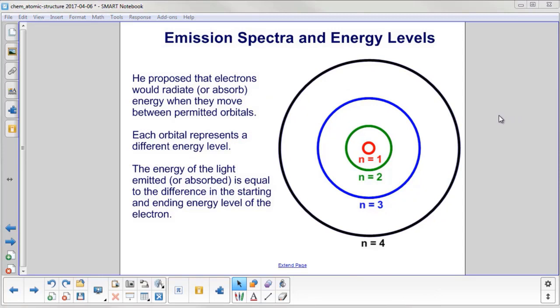Bohr then postulated that electrons would radiate or absorb energy when they moved between the permitted orbitals. So you could go from n equals 1 to n equals 2. Never really said how they would get there because the electrons weren't allowed here in the space between the orbitals.